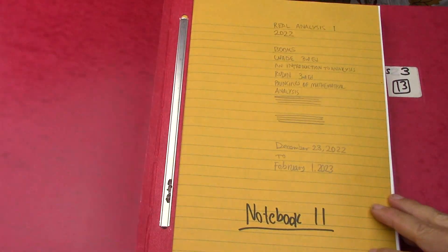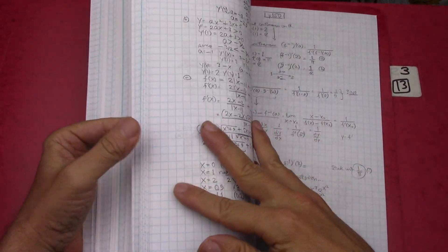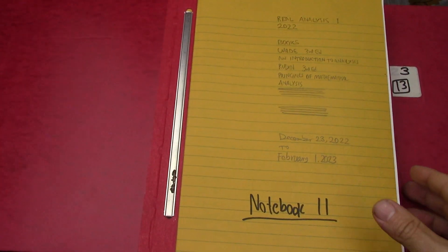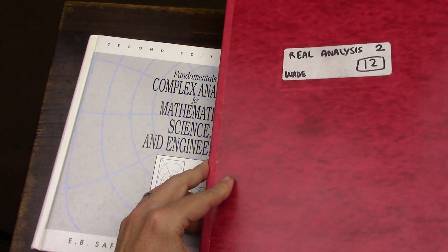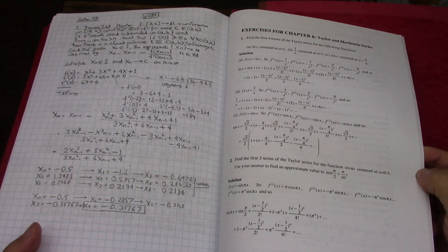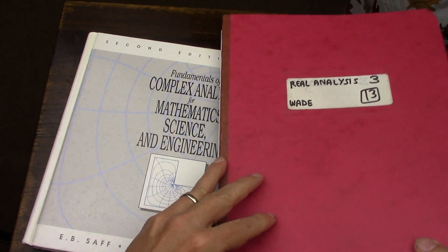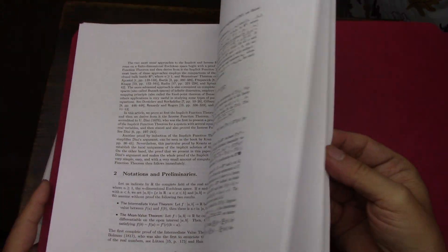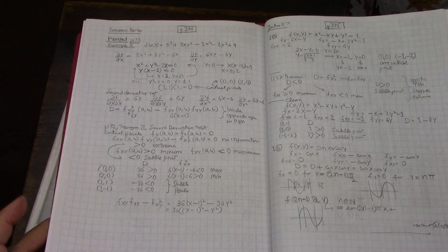And if I go through the notebooks, notebook one I think got as far as chapter four. So this is the first four chapters. Notebook two got as far as chapter seven. Then notebook three got as far as chapter 11.